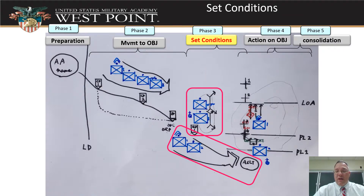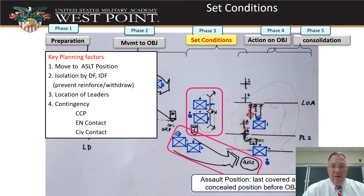That brings us to the third phase with set conditions. I've highlighted the portion of the graphic that goes along with that, showing where our squads go for support by fire and our movement up to our assault position. When we plan this, we have to think about how we're going to get to the assault position, what that route is, and how we're going to isolate the objective using direct and indirect fire so the enemy can't reinforce itself or withdraw. Where our key leaders are and all contingency plans go on there as well.